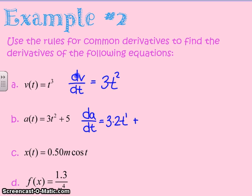As you noticed when I gave you the common derivatives, the derivative of any constant is 0. 5 is a constant, so its derivative is 0. Simplifying this a little bit more, 3 times 2 is 6. So the derivative of my function is 6t.